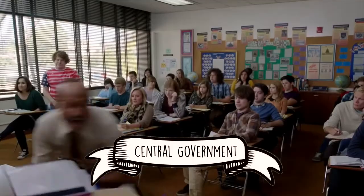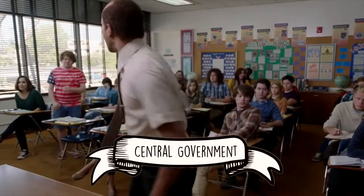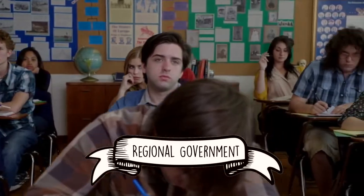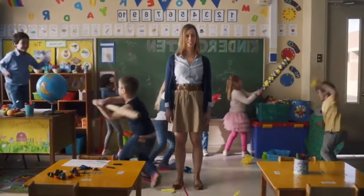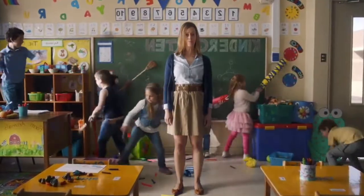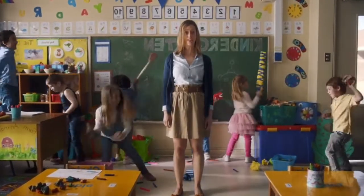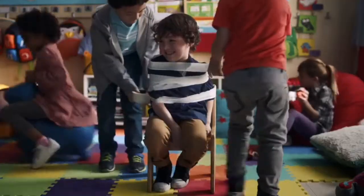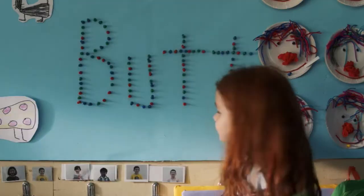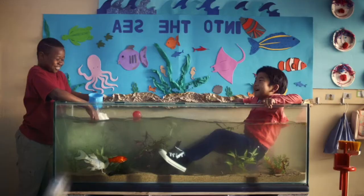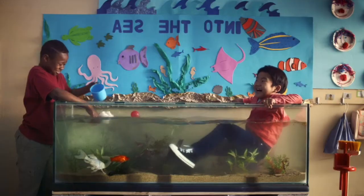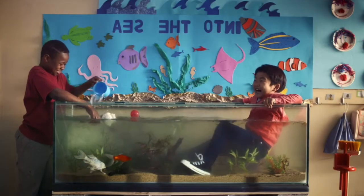Imagine your classroom as a system of government — your teacher represents the national government and all the students represent different regions. Can you imagine if the teacher had no power over the room and the students, or the regional governments, could do whatever they wanted? Yeah, that's kind of what confederations look like.